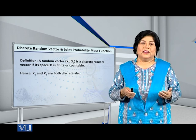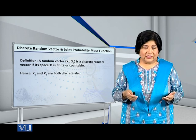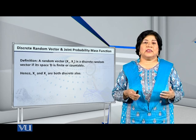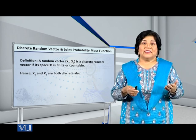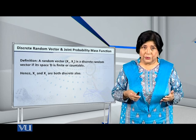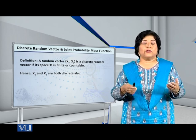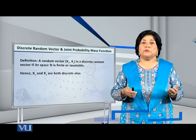What is the definition of a random vector? It is the ordered pair capital X1 comma capital X2, where X1 and X2 are themselves random variables.